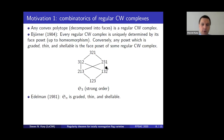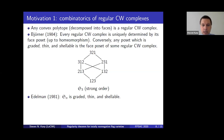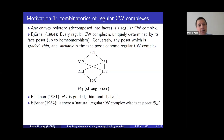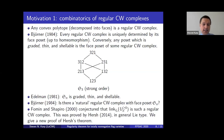There are natural posets such as the strong Bruhat order on the symmetric group, shown to be shellable by Edelman, which come from some regular CW complex but not from any polytope. Björner asked whether this naturally occurring poset corresponds to a naturally occurring space. Nobody knew the answer at the time — this was in the 80s, before Lusztig's work on total positivity. After that work, Fomin and Shapiro realized how to answer Björner's question.